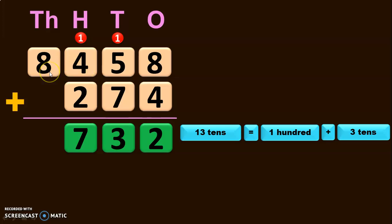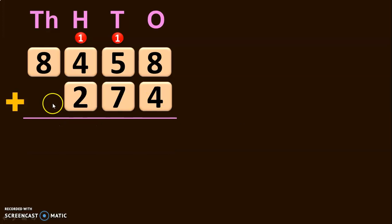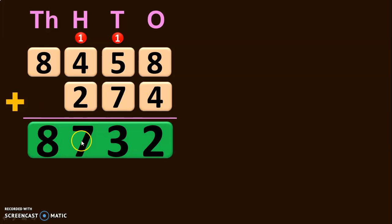Next, move on to the thousands place. Here you have 8 and there is no digit from the second number, so assume it to be 0. So 8 is written directly in the thousands place. The answer is 8,458 plus 274 equals 8,732.